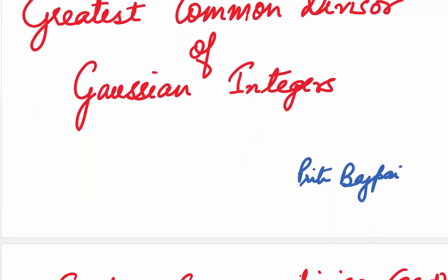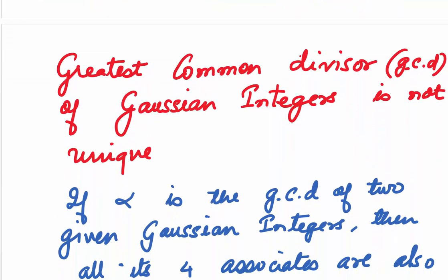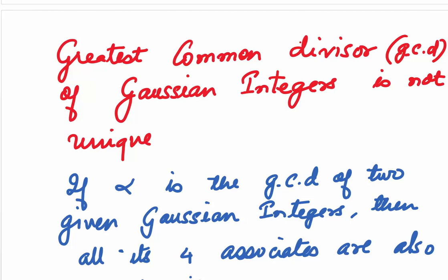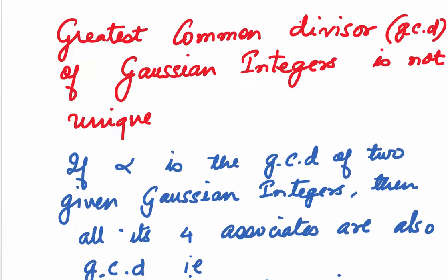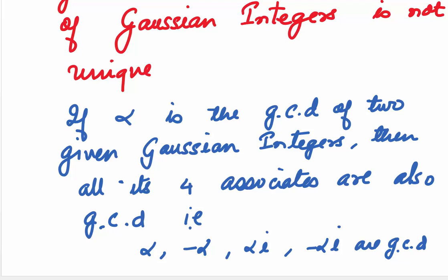Before we begin, you should note a few things. First of all, unlike our integers, the GCD of Gaussian integers is not unique. That is, if we have alpha as the GCD of two given Gaussian integers, then all its four associates will also be the GCD.